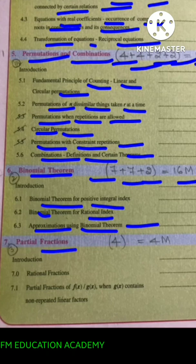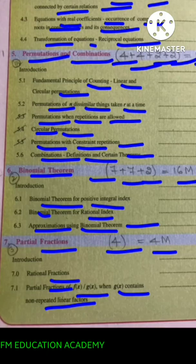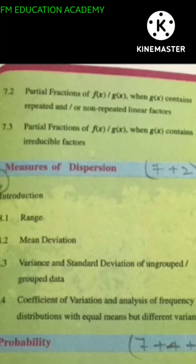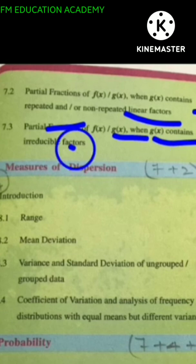Chapter 7, partial fractions. 4 mark questions will come from this. Introduction, rational fractions, partial fraction of f of x by g of x when g of x contains non-repeated linear factors, partial fractions of f of x by g of x when g of x contains repeated and or non-repeated linear factors, partial fractions of f of x by g of x when g of x contains irreducible factors.